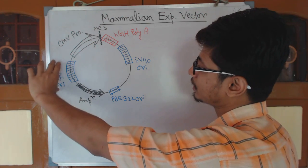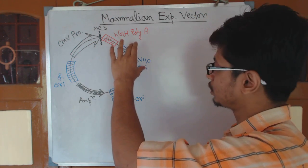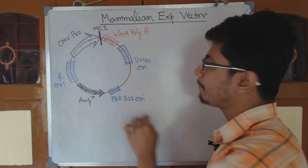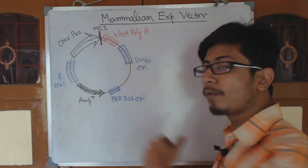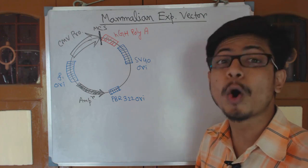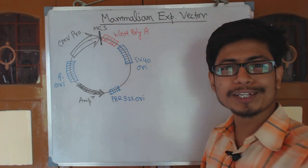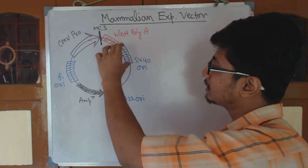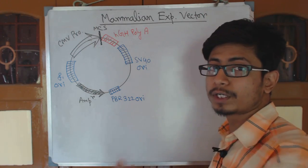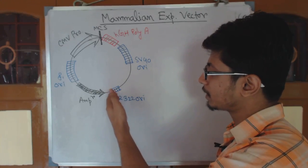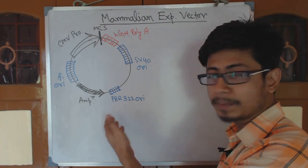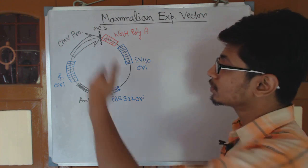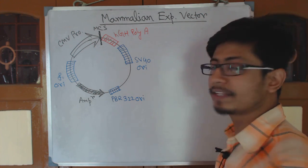Here we have three origins of replication: the F1 origin of replication, the SV40 origin of replication, and the pBR322 origin of replication. These names refer to where the sequences were originally obtained. This is an artificially constructed vector: the SV40 origin comes from SV40 virus, the pBR322 origin from the pBR322 plasmid, and the F1 origin from F1 phage.